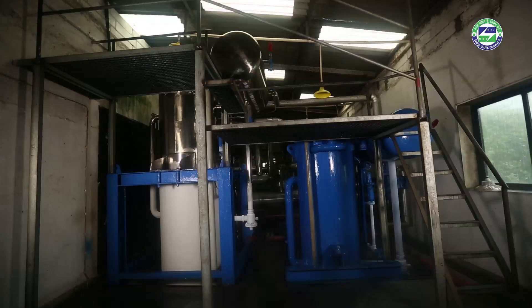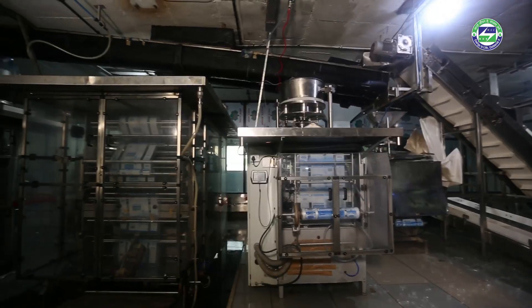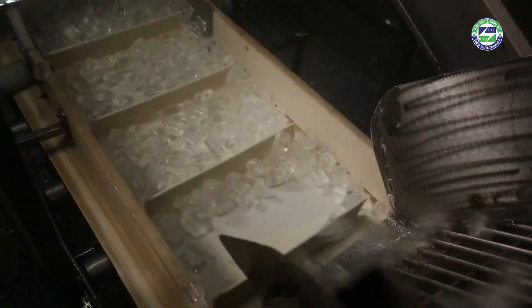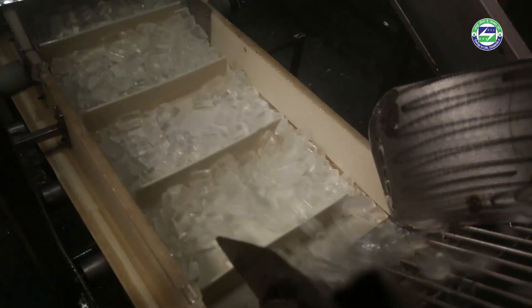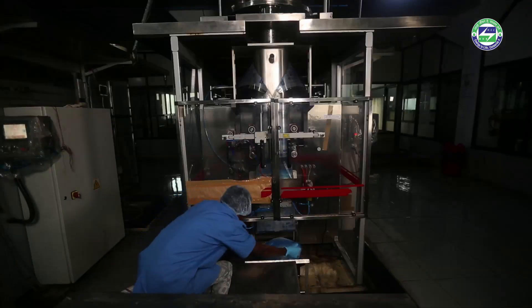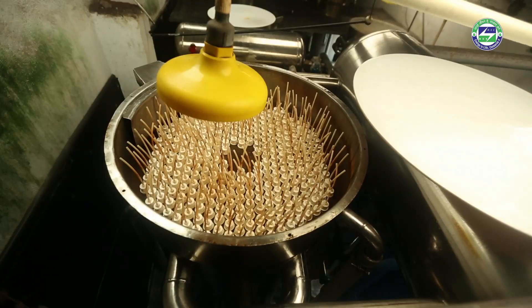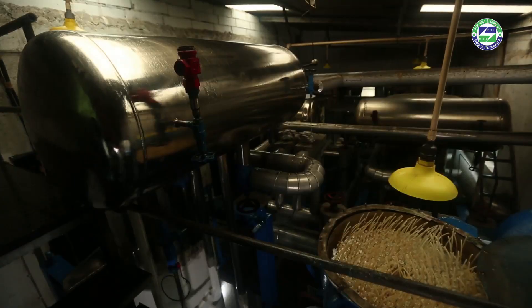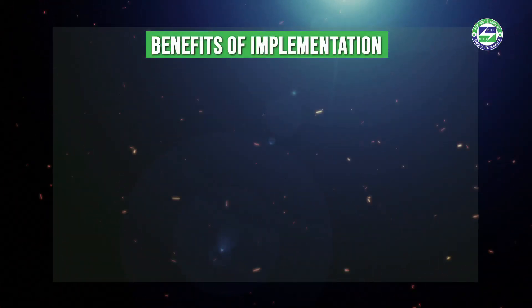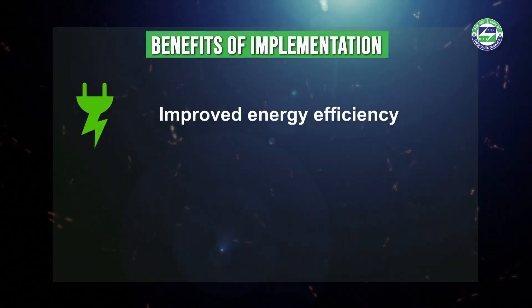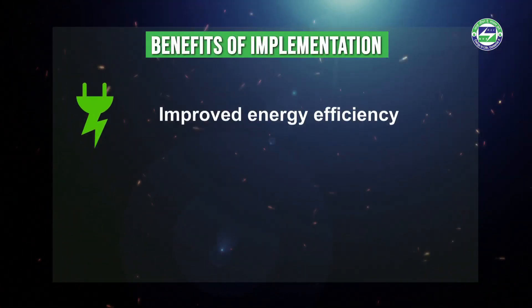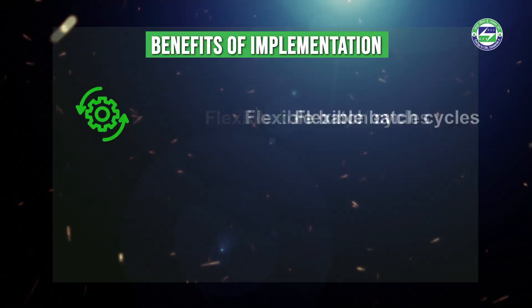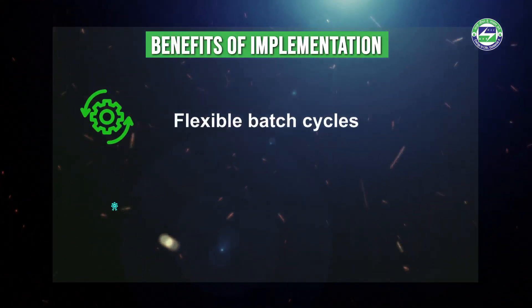In a tube ice plant, the harvesting and storage operations are automated. The replacement of conventional ice plants with tube ice plants leads to benefits such as improved energy efficiency, labor cost savings, and flexible batch cycles.